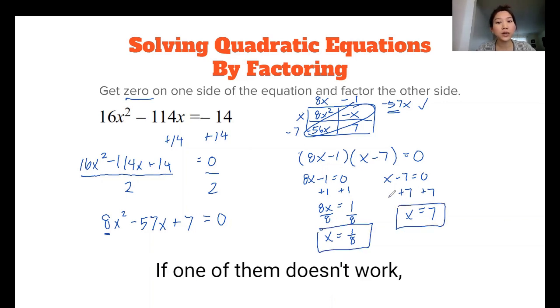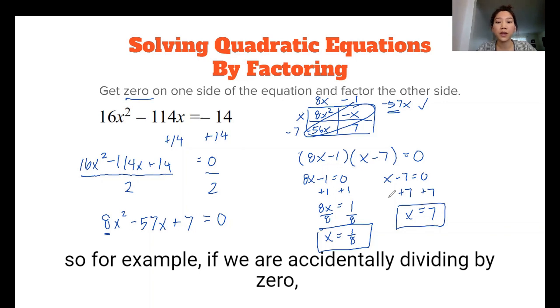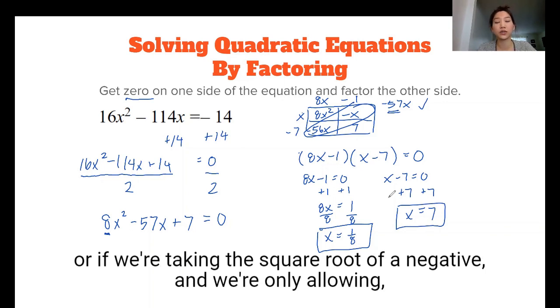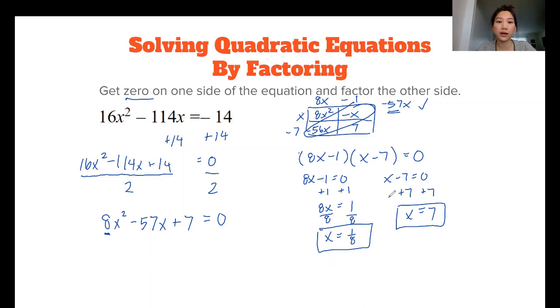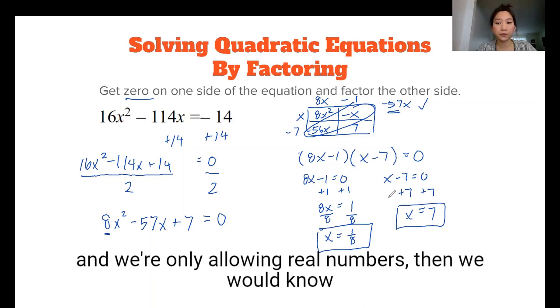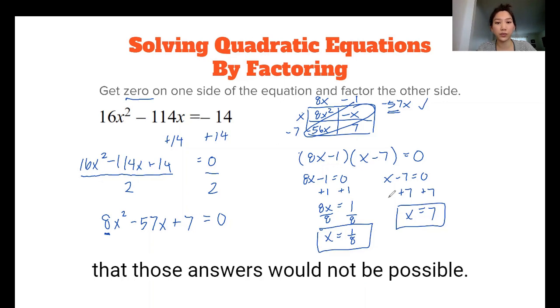If one of them doesn't work, so for example, if we are accidentally dividing by 0, if we're taking the square root of negative and we're only allowing real numbers, then we would know that those answers would not be possible.